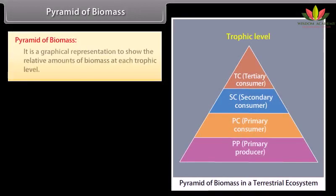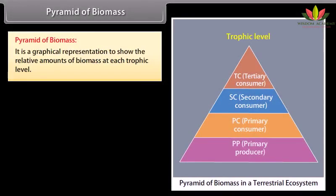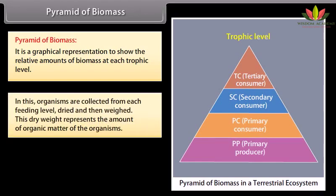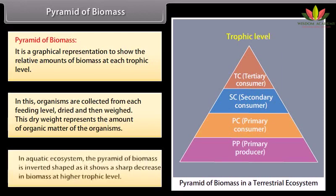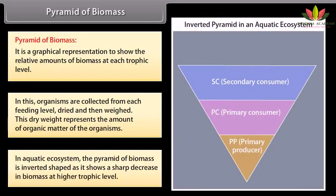Pyramid of Biomass: a graphical representation showing the relative amounts of biomass at each trophic level. Organisms are collected from each feeding level, dried, and then weighed; this dry weight represents the amount of organic matter. In aquatic ecosystems, the pyramid of biomass is inverted-shaped, as it shows a sharp decrease in biomass at higher trophic levels.